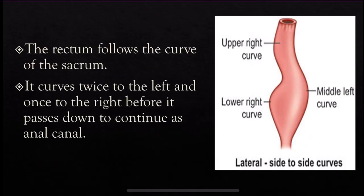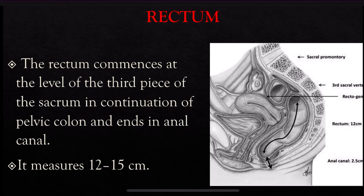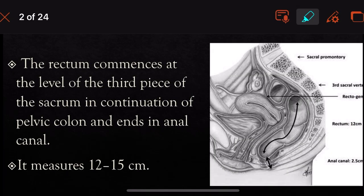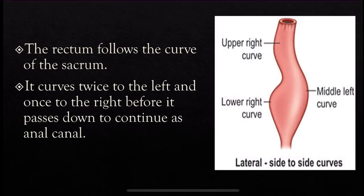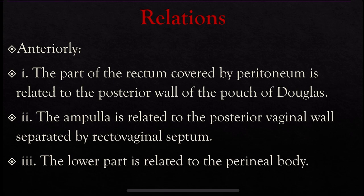The rectum follows the curves of the sacrum. Towards the left side, there are two curves: the right upper curve and the right lower curve. Towards the right side, we have one curve — the middle left curve. So the rectum curves twice to the left and once to the right before continuing as the anal canal.